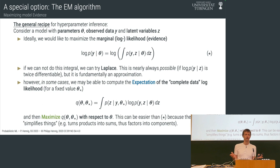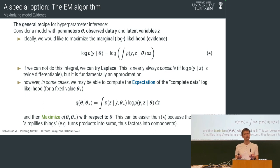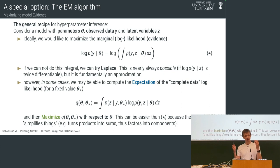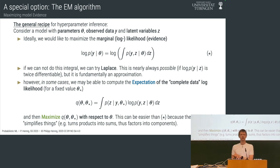Parameters are numbers you need to write down the model, and you don't actually know what they are — you also don't care so much about them, but you have to have them in your model otherwise you can't make it work. So if you have to have them, the natural question is: how do I set them? We need algorithms to set those parameters.